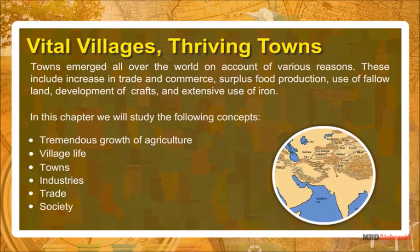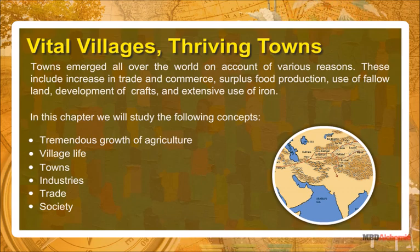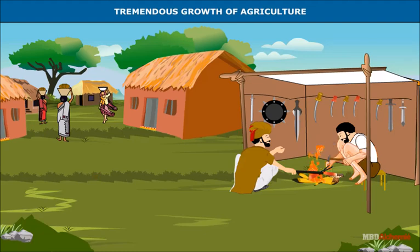Towns emerged all over the world on account of various reasons. These include increase in trade and commerce, surplus food production, use of fallow land, development of crafts, and extensive use of iron. In this chapter we will study the following concepts: tremendous growth of agriculture, village life, towns, industry, trade, and society.